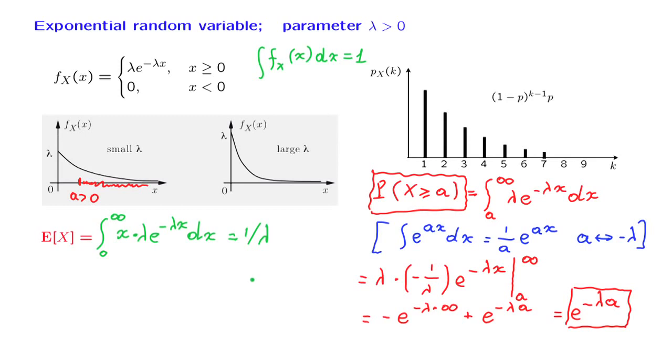Regarding the calculation of the expected value of the square of the random variable, we need to write down a similar integral, except that now we will have here x squared. This is just another integration by parts, only a little more tedious. And the answer turns out to be 2 over lambda squared. Finally, to calculate the variance, we use the handy formula that we have.